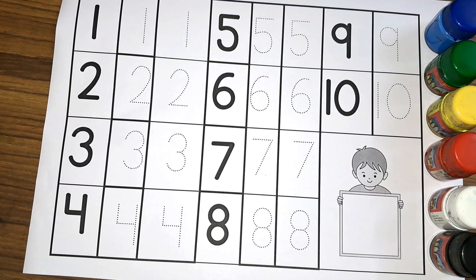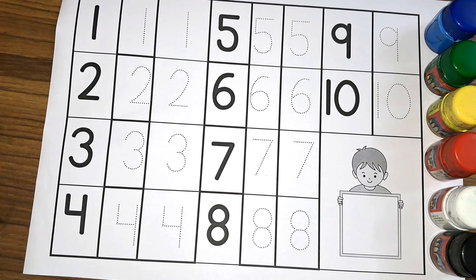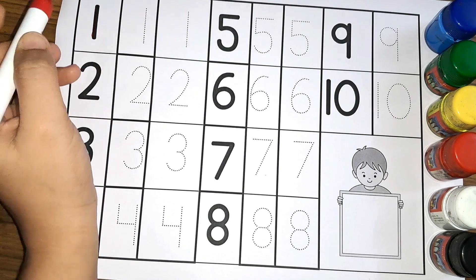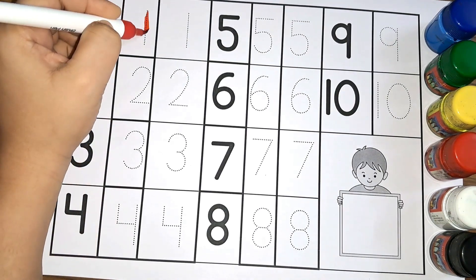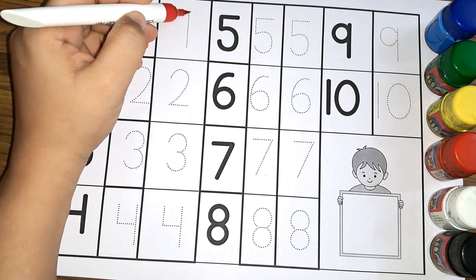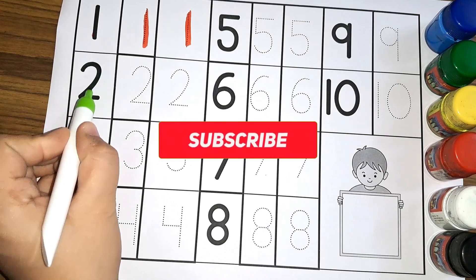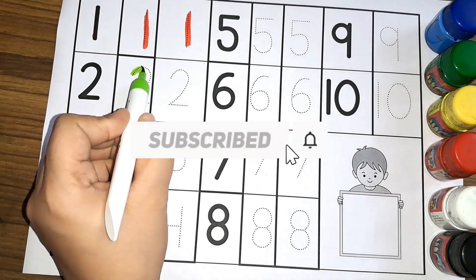Let us start with the numbers. This is number one, number one, number one. Then there is number two, number two.